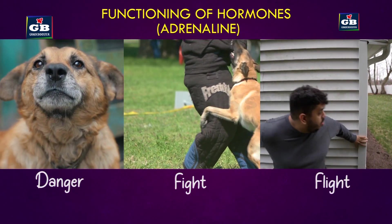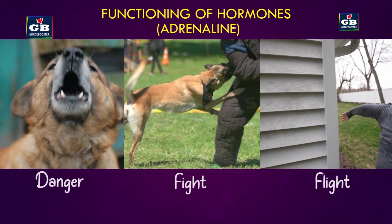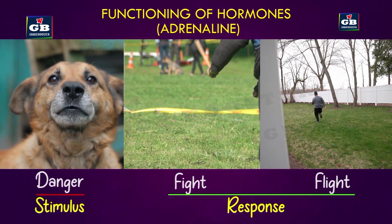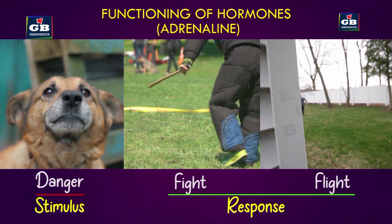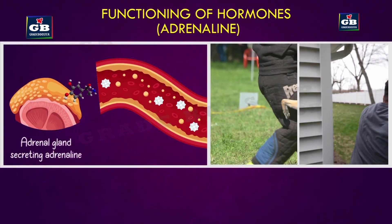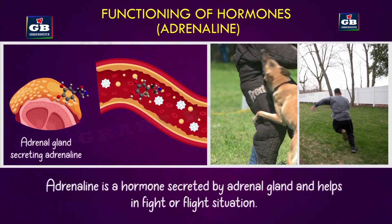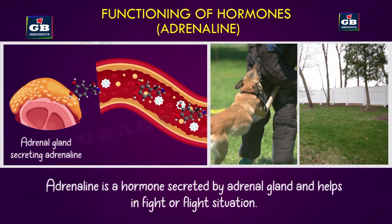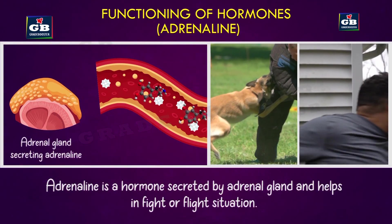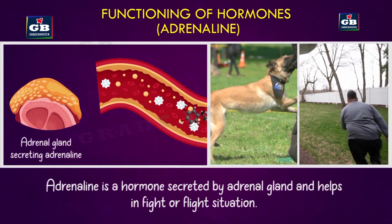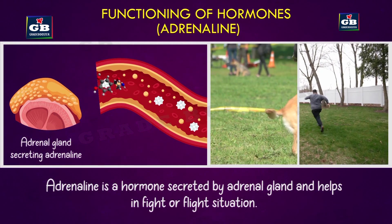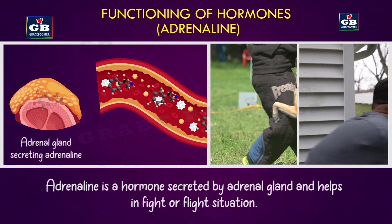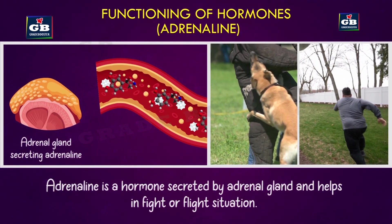Example — the fight or flight response. If a dog attacks a person, that is the stimulus; running away or fighting is the response. The adrenal gland releases a hormone called adrenaline. Adrenaline increases heart rate and breathing to supply more oxygen and glucose to muscles, reduces blood flow to the skin and digestive system, and increases it to the muscles.